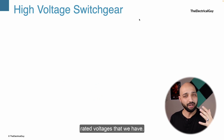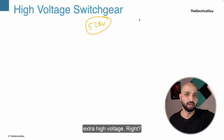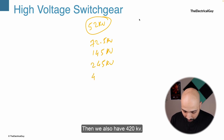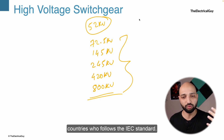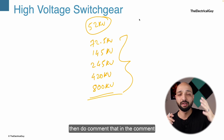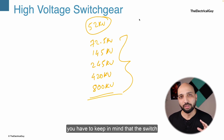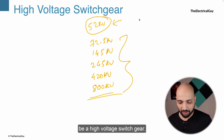Now let us see the different rated voltages. Anything above 52 kV is referred to as high voltage or extra high voltage. In India the rated voltages are 72.5 kV, 145 kV, 245 kV, 420 kV, and up to 800 kV. These are common for all countries following the IEC standard, though some may also have 550 kV. If your country has different voltages, comment below. Whenever you see these voltages, the switchgear used will be high voltage switchgear — anything above 52 kV.